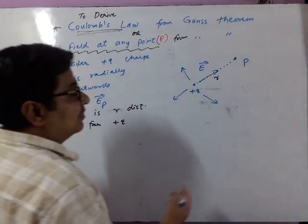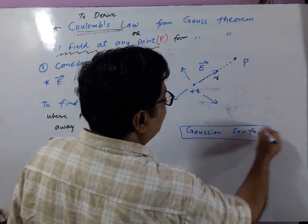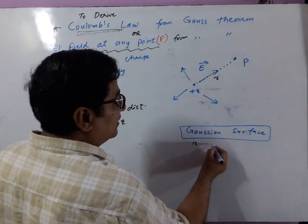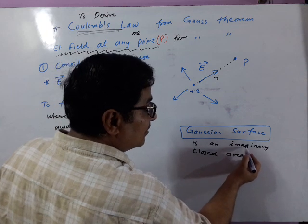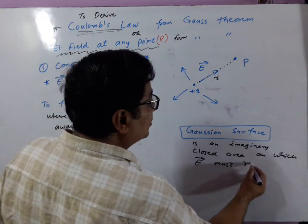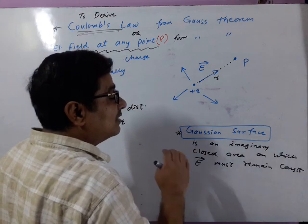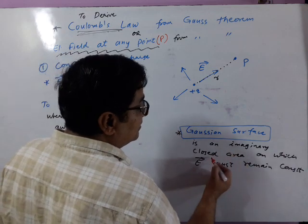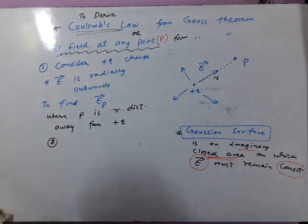Step number 2: to apply Gauss's theorem, we need to consider a Gaussian surface. Without a Gaussian surface, you are not able to apply Gauss's theorem. A Gaussian surface is an imaginary closed area on which the electric field must remain constant. Without considering this Gaussian surface, we will never be able to apply Gauss's theorem — this is a necessary condition. So, we need to find some imaginary closed area where the electric field remains constant for this particular problem.